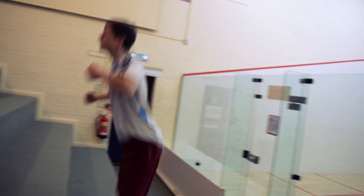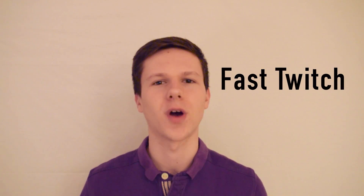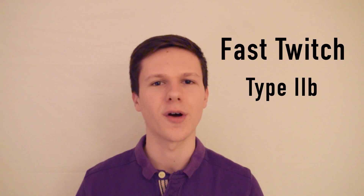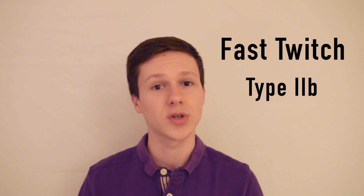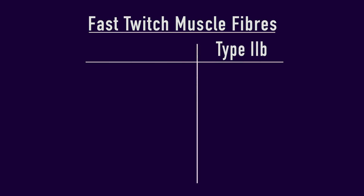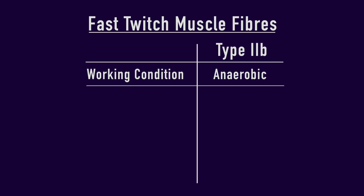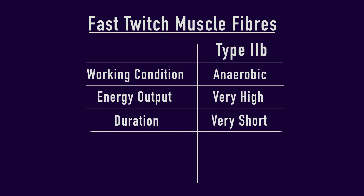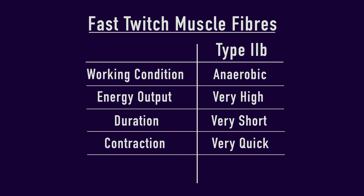The reason why plyometric training helps to improve power is because you'll be developing something called fast-twitch muscle fibres. More specifically, you'll be developing your Type 2b fast-twitch muscle fibres, which are adapted to produce fast, explosive movement, similar to the one used in this type of training. These muscles work under anaerobic conditions and produce a very high energy output, but for a limited duration of time. They have the quickest rate of contraction out of all the muscle fibres, making them perfectly suited for this energy system.